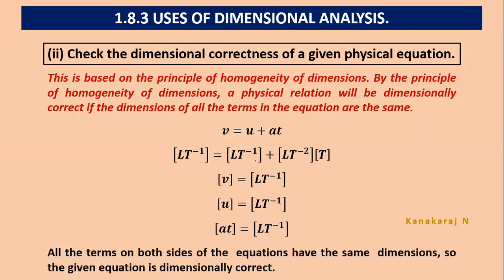This is what we call it as homogeneity. Principle of homogeneity of dimension. All the terms on both sides of the equation have the same dimension. This equation is dimensionally correct.